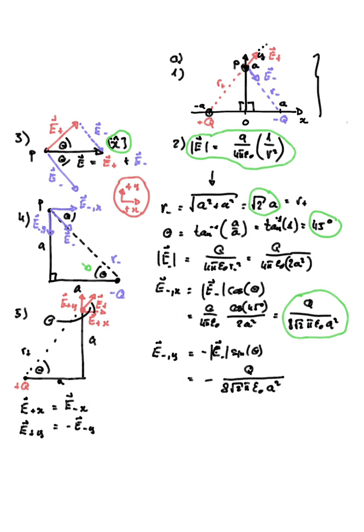The y-component of the electric field from the negative charge points downward, so it's given by minus E- · sin(45°). Since sin(45°) = 1/√2, the magnitude is the same: q / (8√2 · π · ε₀ · a²), but the value is negative because it points down. To find the net electric field, we also need the x and y components of the positive charge's field, then add the two together.